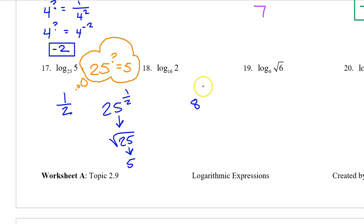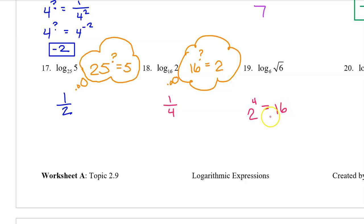By the way, 8 to the 1 third power is the same thing as the cube root of 8, which is 2. 16 to what power is 2? This is going to be 1 fourth. I need you to memorize that 2 to the 4th power is equal to 16, if you have not already memorized that. That means that the 4th root of 16 is equal to 2. Written as a fractional exponent, this is the same as 16 to the 1 fourth power is equal to 2. So that's what I just did. What power turns 16 into a 2? The 1 fourth power.